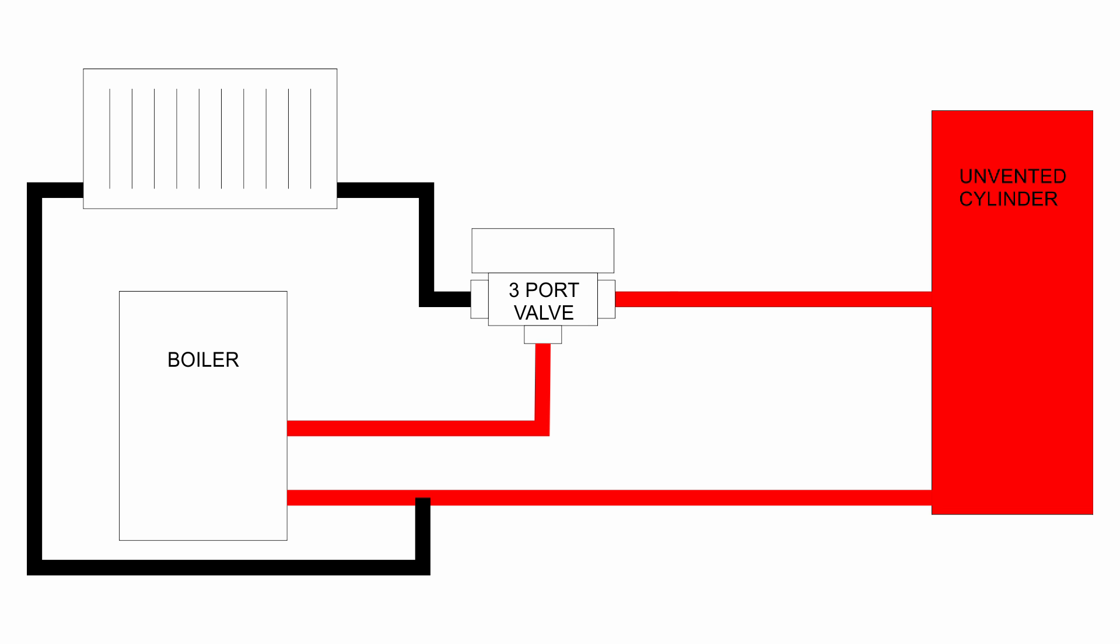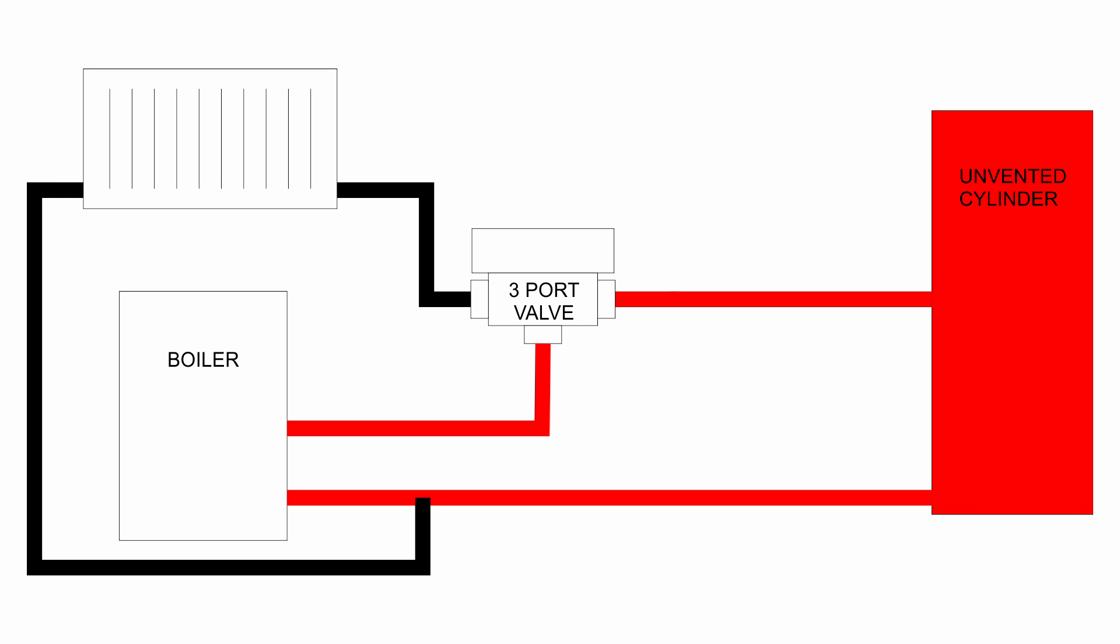So that's really the reason for putting the extra two port valve in there, so regardless of whether the boiler is working or not, cutting power to that valve will close the valve off and prevent water flowing to the cylinder, regardless of what the rest of the system is doing.